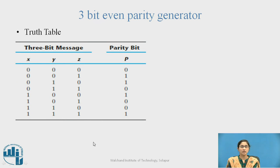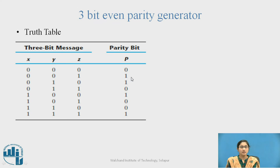This is the truth table for the 3-bit Even Parity Generator. In the input code, if the count of 1 is odd, P gets the value 1 to make the total code an Even Parity Code. So in the Even Parity Generator, P gets the value 1 for the first, second, fourth, and seventh combinations.